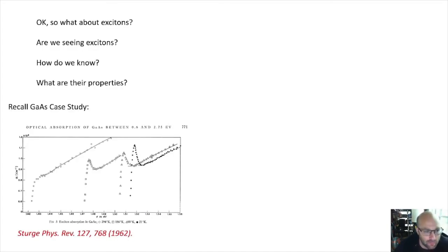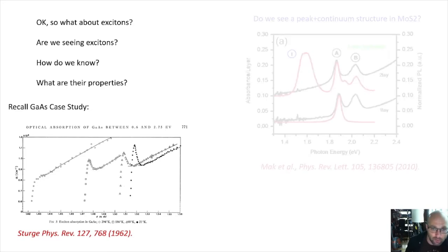So what does this have to do with excitons? Well, this whole excitation process is definitely involving an electron in a hole, but how do we know we're seeing excitons? What are their properties? Let's first recall our gallium arsenide study where we said the signature that we tend to look for in excitons is a sharp peak riding on top of a continuum background. Let's take a look at MoS₂ and see if we can see that type of structure.